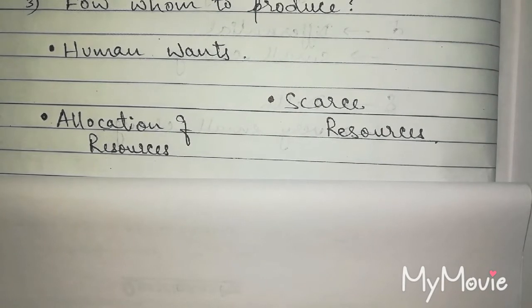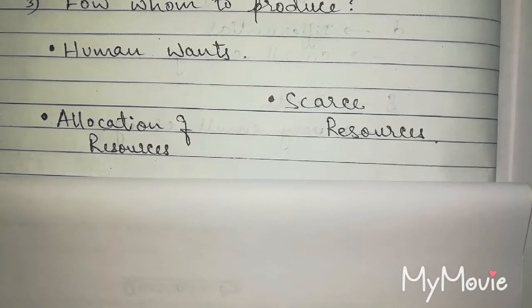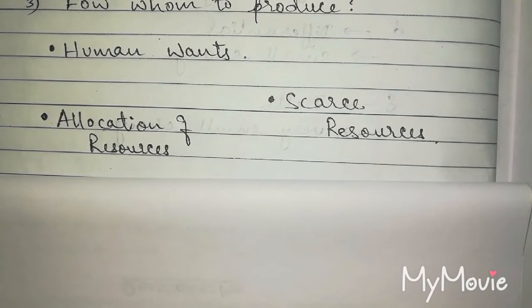Here, allocation means distribution of resources so that each will have maximum satisfaction. Similarly, the resources are scarce, human wants are unlimited. We need everything. And when we allocate them, that we learn through economics. So why am I explaining this? Because central problems of economy depend on this concept only.